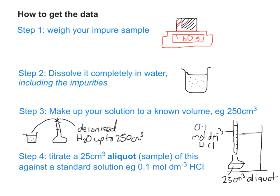And then you divide that by the mass of the impure sample, which is the amount that you weighed in step one. Then you multiply that by 100 and you get your percentage of purity.